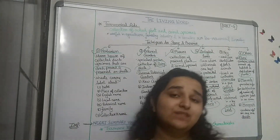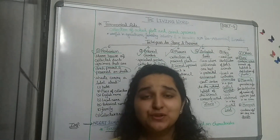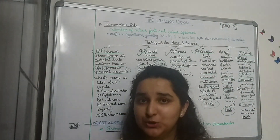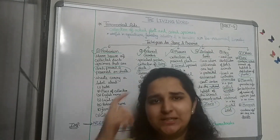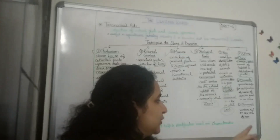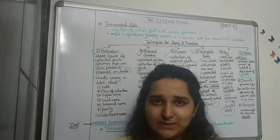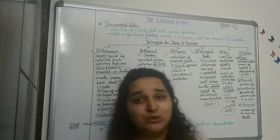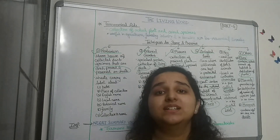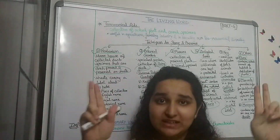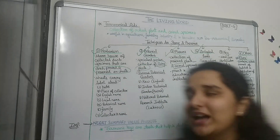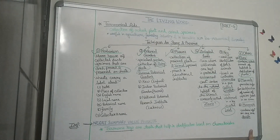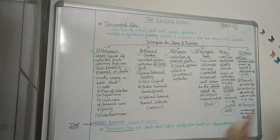Lastly, monographs contain information on any one taxon. For those who have watched Part 2 of this video, taxa or taxon was the scientific term used for the convenient categories in which we place different species and organisms. So monographs deal with comprehensive information on a single such taxon.